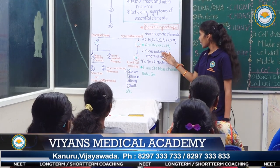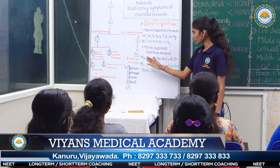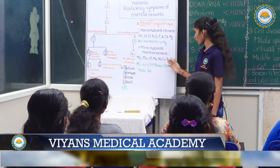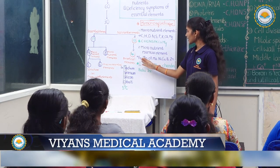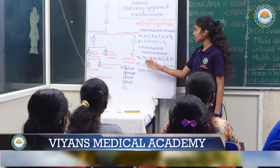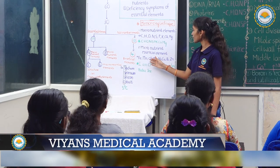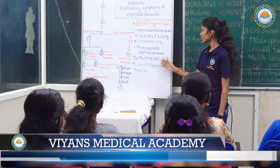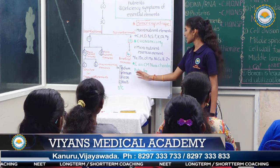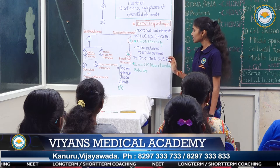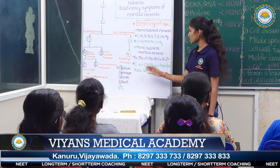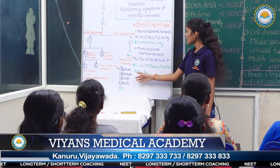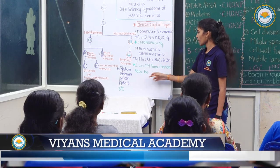Micronutrient essential elements are: iron, manganese, chlorine, molybdenum, nickel, copper, boron, and zinc. The memorizing technique is 'I am CM Nara Chandra Babu Ji' — I = iron, M = manganese, C = chlorine, M = molybdenum, Nara = nickel, Chandra = copper, Babu = boron, Ji = zinc.